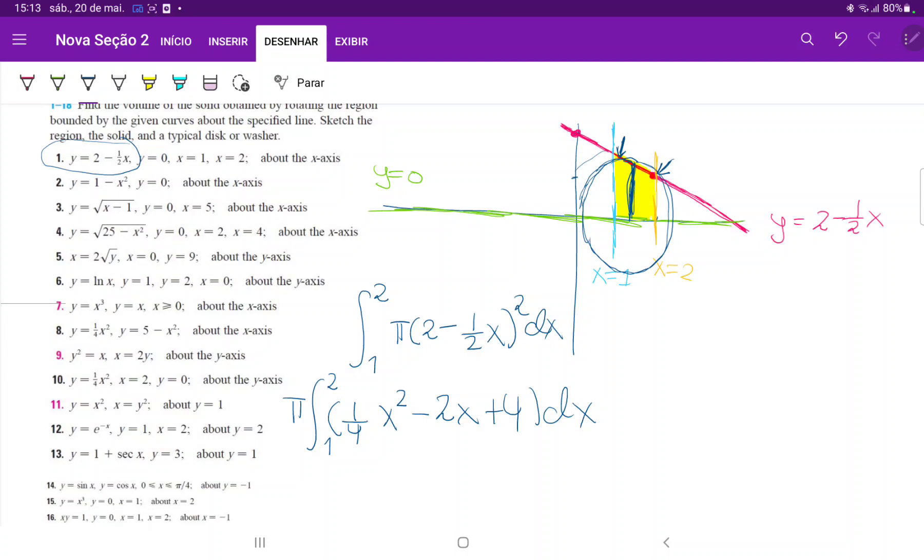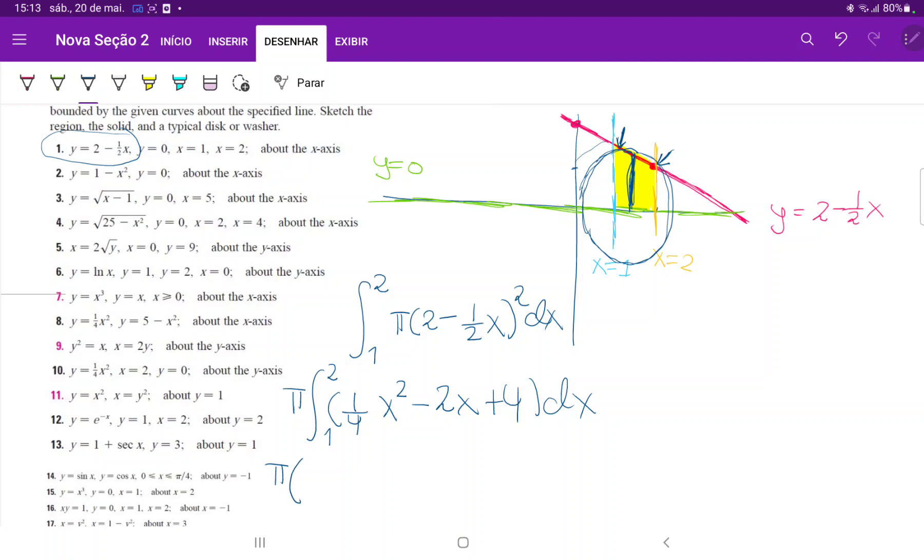All right, now we are ready to integrate this. This is pi times, this is x cubed over 3 times 4, so over 12, minus 2 times x squared over 2 plus 4x, and all of this evaluated from 1 to 2.